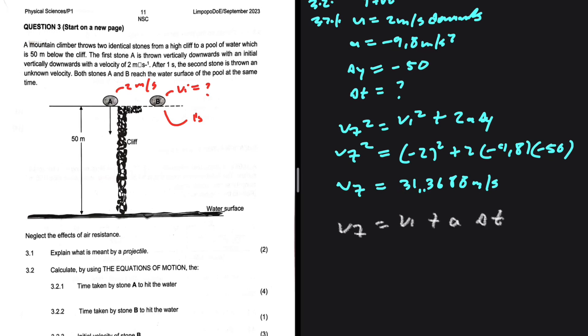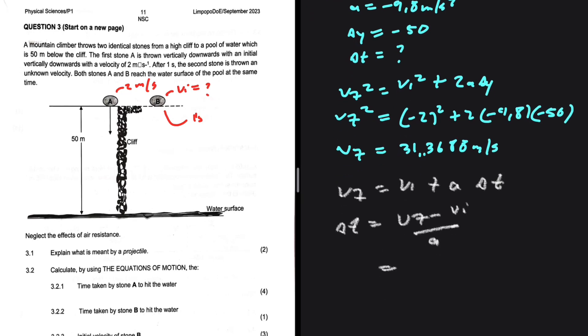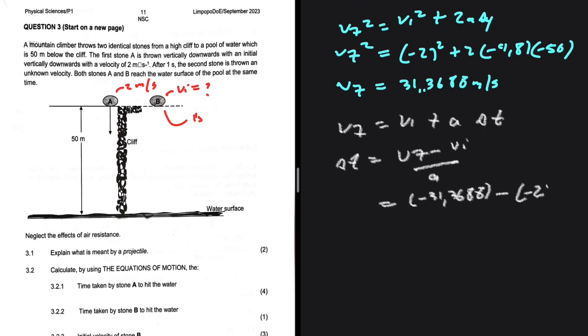Now that I have vf, I'm going to say that vf = vi + a*delta t. So delta t = (vf - vi) / a. vf is -31.3688 minus vi, which is -2 meters per second, divided by the acceleration, -9.8. Our delta t is 2.99, well it's just 3 seconds because we're supposed to round it off to two decimal places. We have 3 seconds.